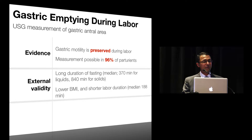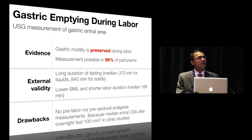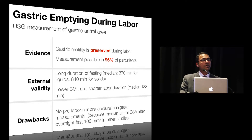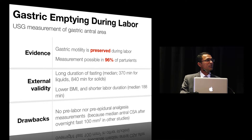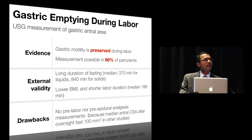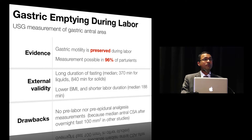The drawbacks of the study include no pre-labor or pre-epidural analgesia measurements. If you go back, the baseline antral cross-sectional area was about 320, whereas most studies show that after overnight fasting in a non-laboring pregnant woman it's usually about 100. So it's possible that labor actually delays gastric motility and epidural analgesia probably preserves it, or maybe even enhances it — and that's a tantalizing possibility.